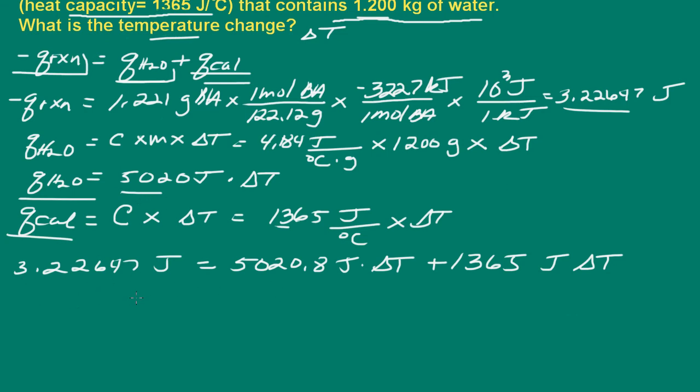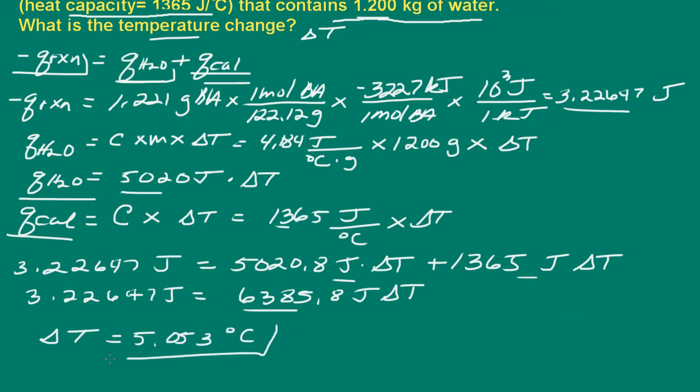Let's solve for delta T. So we do some rearrangement here. 3.22647 joules equals, we can add these terms together, 6,385.8 times delta T. So if we divide both sides by this term, we end up with delta T equal to 5.053 degrees Celsius.